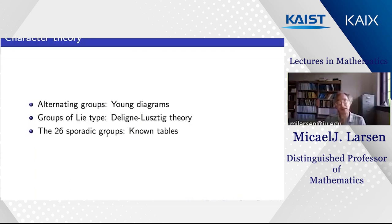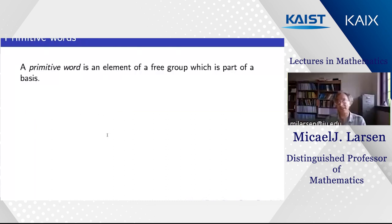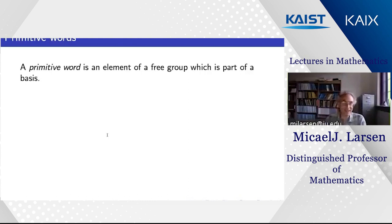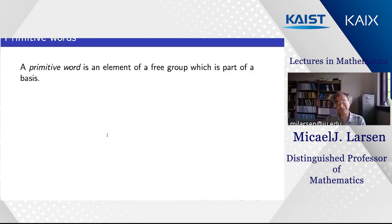Now I want to say something about words. The story I'm telling is not the story I'd like to be telling: I'd like to discuss a general theory, but we don't really know the general theory. So instead of talking about general words, I'll talk about several families of words where we do understand what happens — and what happens is different in different families, with different methods. I hope that studying examples will give some picture of what might happen in general.